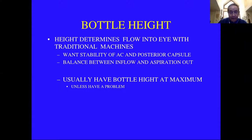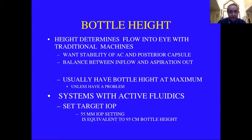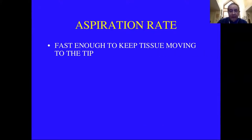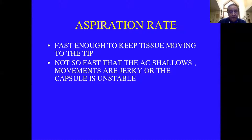If things are going reasonably normally, you want to have the bottle height at a maximum. If you have a problem — like grabbing iris or capsule — lower the bottle height and slow down your aspiration rate. With active fluidics systems, you set the target intraocular pressure. Setting it at 55 mmHg is approximately equivalent to 95 centimeters of bottle height, which is usually as high as the average gravity feed system goes. You want aspiration rate fast enough to keep tissue moving to the tip but not so fast that you have an unstable chamber. If movements are jerky or you're getting movement out of the posterior capsule, slow it down.